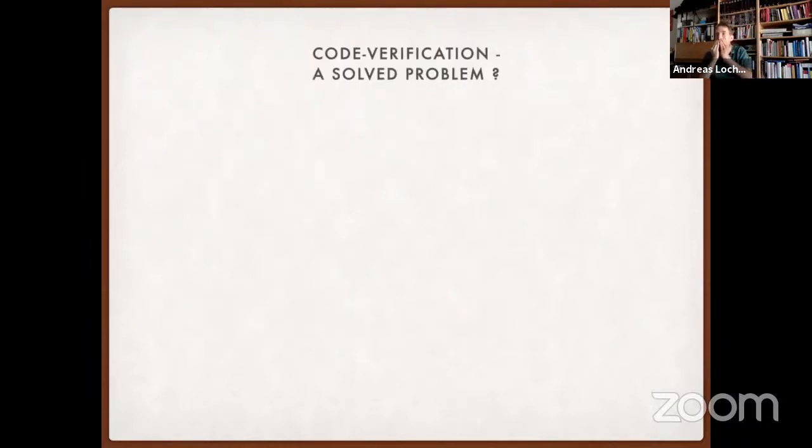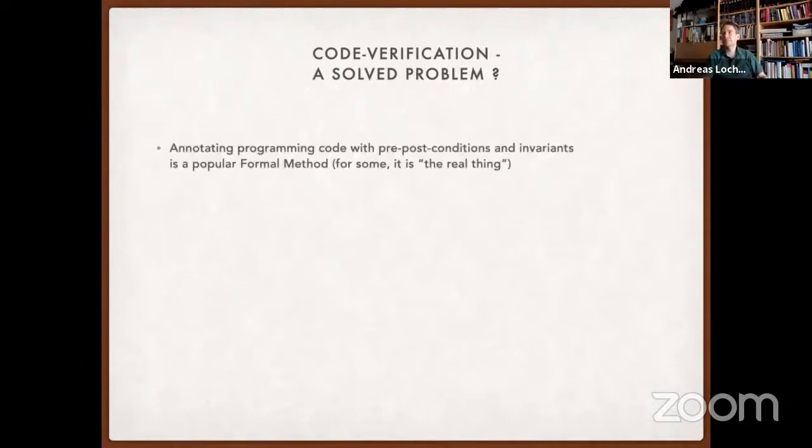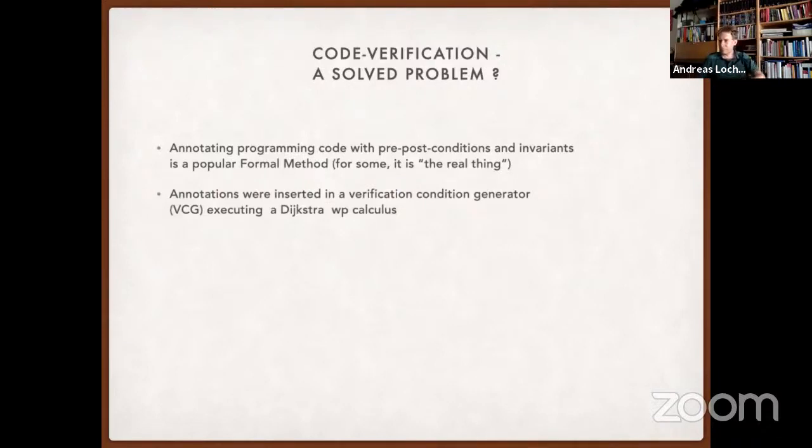Let's focus on the first point: code verification - is it a solved problem? Annotating programming code with pre/post conditions and specification constructs is a very popular formal method. For some, it's the real thing. Annotations are inserted into the program source and via verification condition generator based on WP calculus of Dijkstra, extracts more or less automatically verification conditions which can then be treated by a constraint solver.